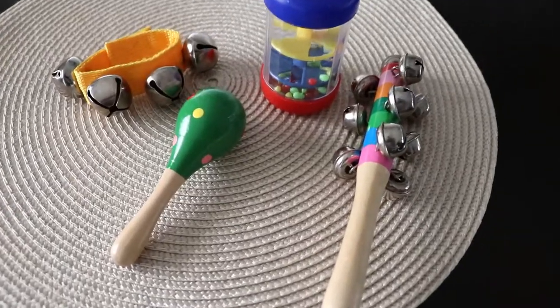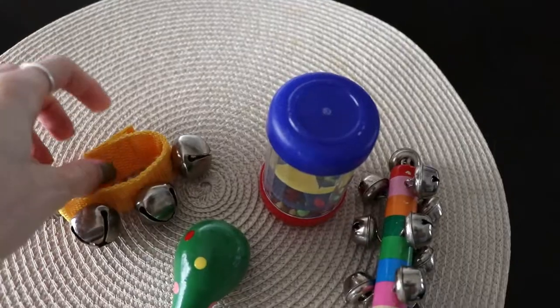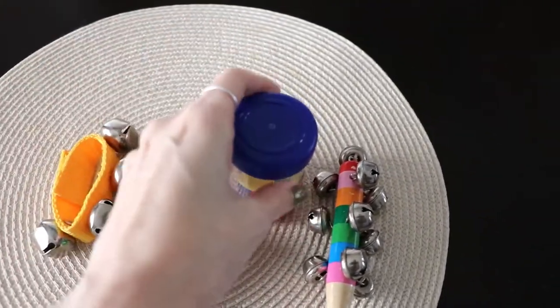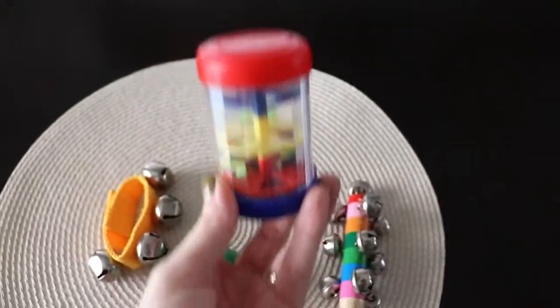Next up is this 23 piece wood instrument set. And this was amazing. When he was little, he loved to be able to just grab these and explore the different types of sounds that it made from the bells to just the little wooden beads and things.